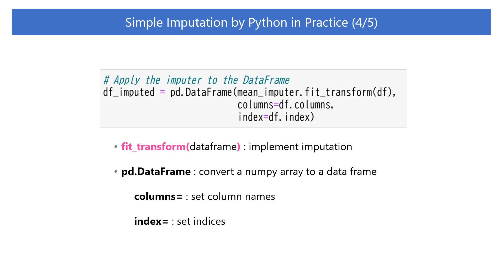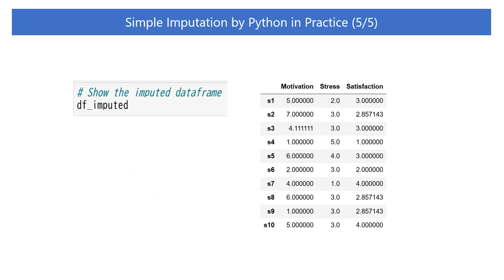However, when we apply the fit_transform method to a data frame, the data frame will be converted to a NumPy array. So, let's apply the pandas DataFrame method to convert it back to a data frame. When the data was converted to a NumPy array, the index and column name information was deleted, so set the columns and index arguments to assign the column names and index of the original data frame. Then store the imputed data frame into a variable named df_imputed. Let's display the imputed data frame — as we can see, the missing data was imputed and now there are no missing values. The average values of each variable were imputed to the cells that had missing values.